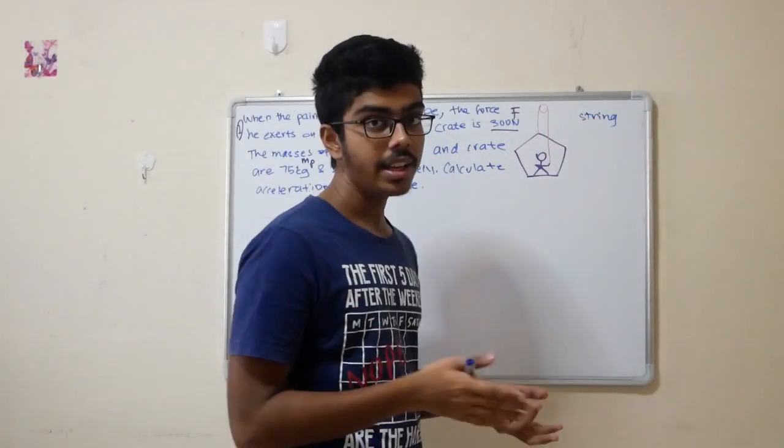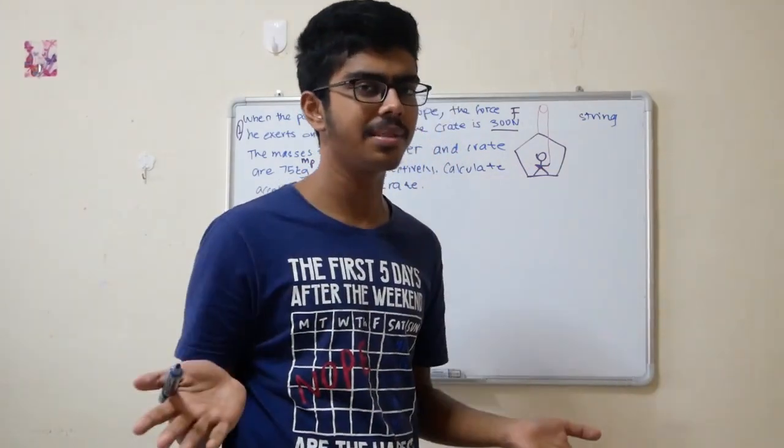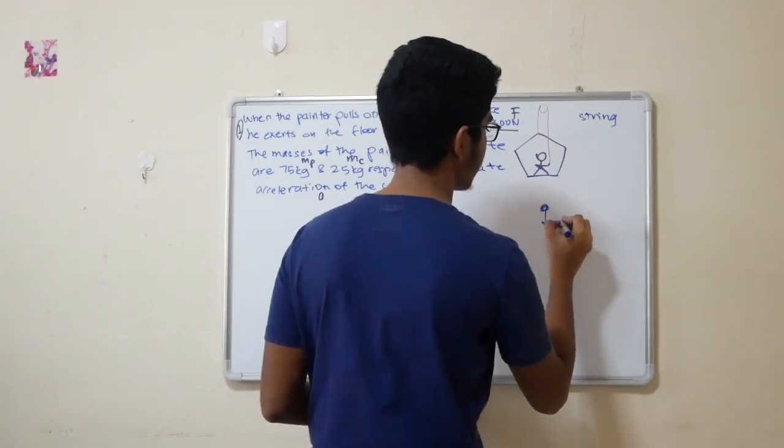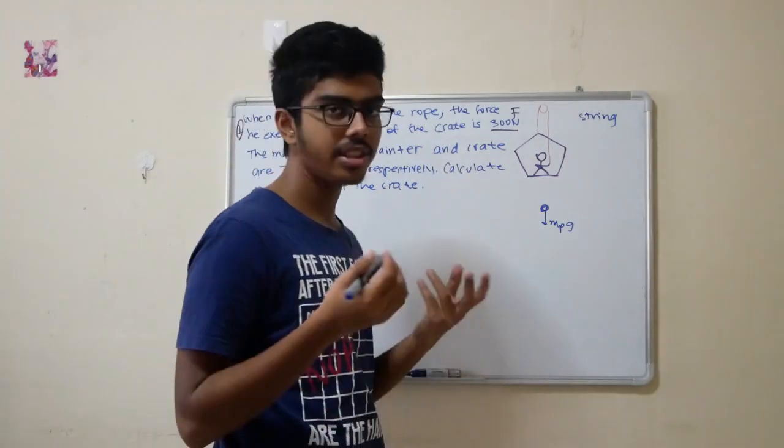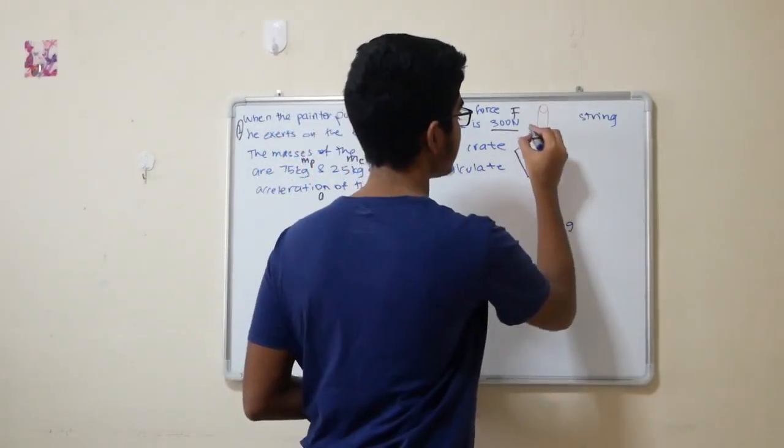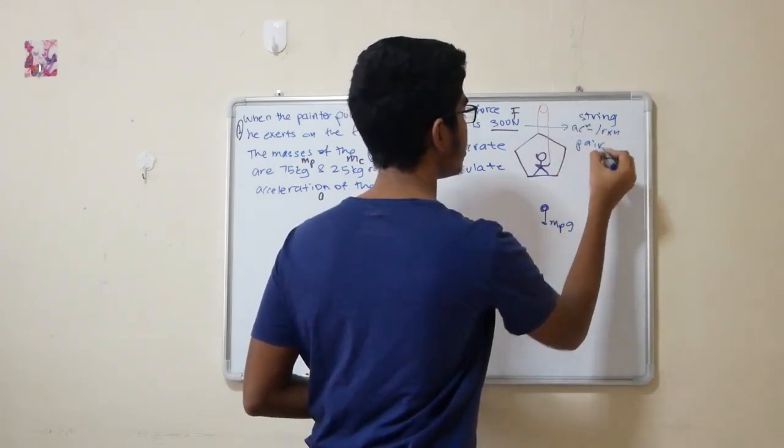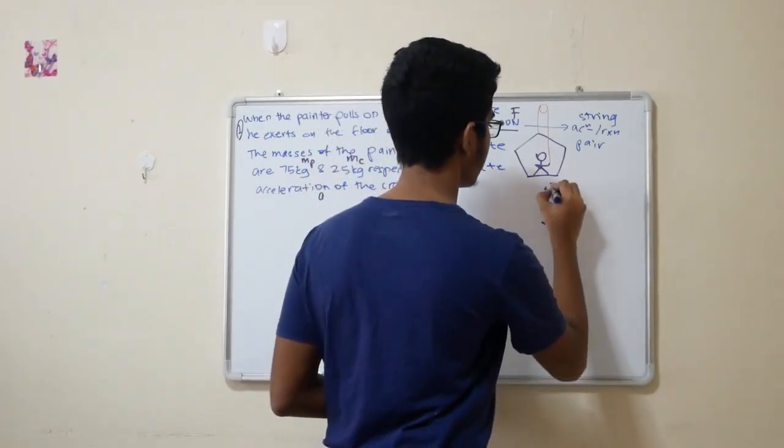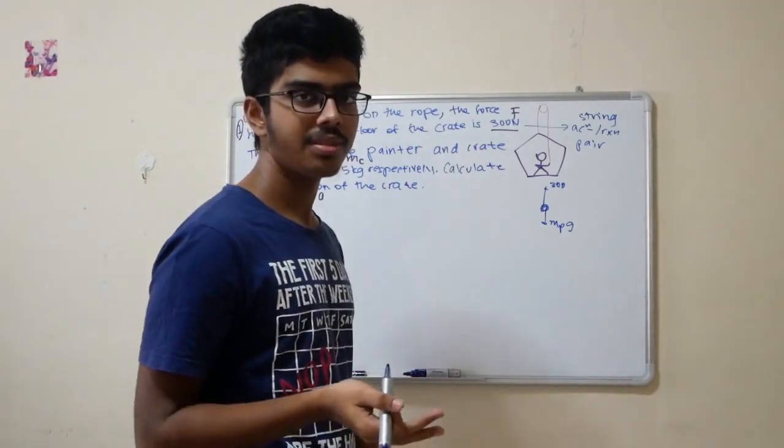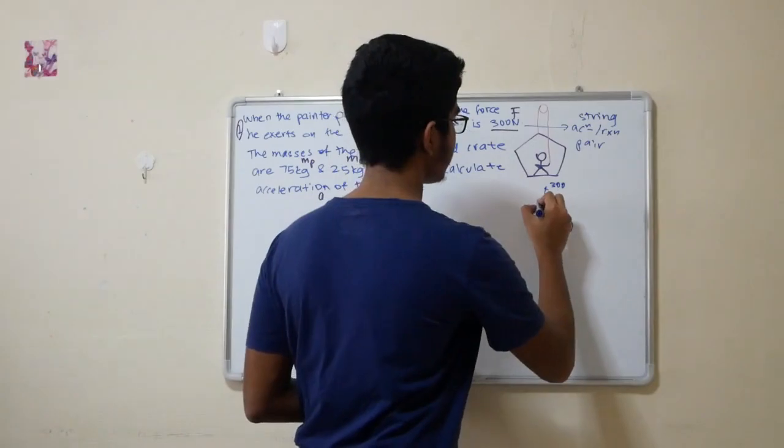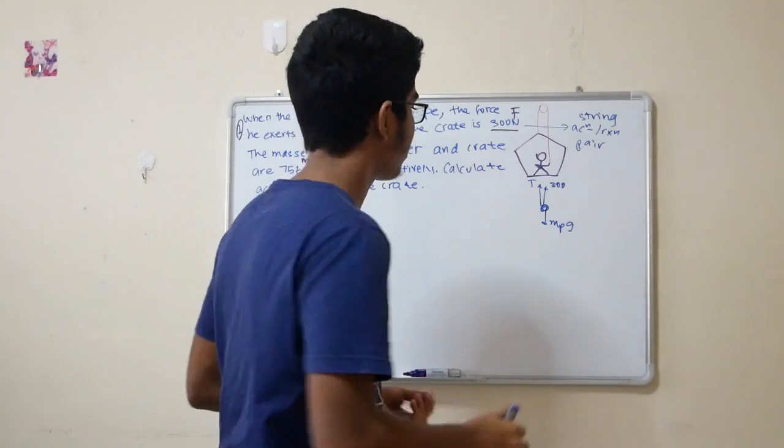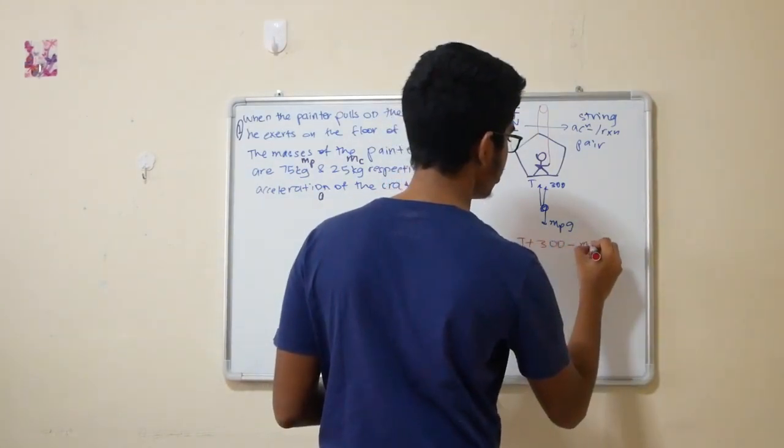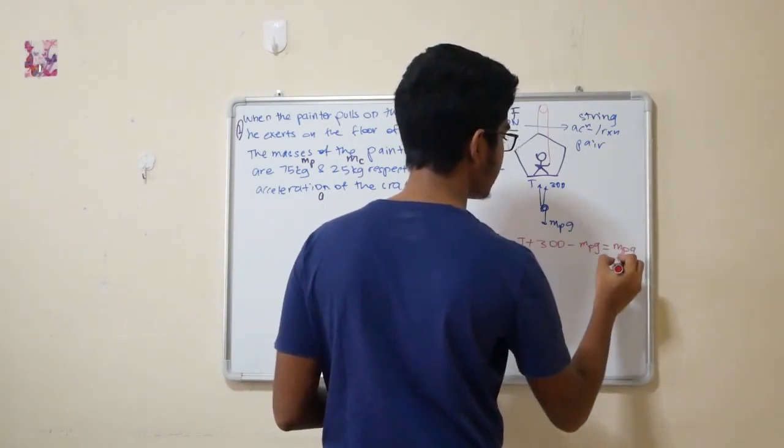First step, define the system. There are many systems that you can take note of. We consider the man as a system. What are the forces acting on this man? His own weight, mass of the painter times G. The force they exert on the floor of the crate is 300 newtons. Does this remind you of action-reaction pair of forces? If he exerts a 300 newton force downwards on the crate, the crate will exert a 300 newton force upwards. He pulls, so he experiences a tensional force T.